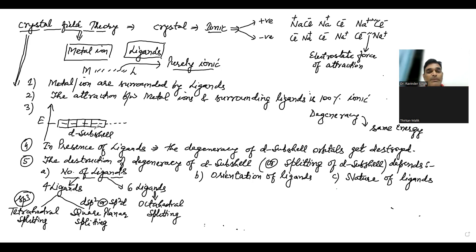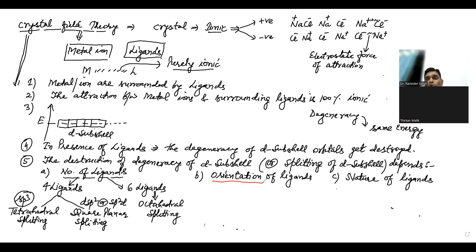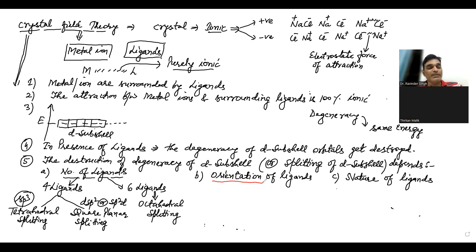The orientation of the ligands also matters — whether the ligand is directly facing the orbital (along the axis), causing more repulsion, or approaching from the side (between the axes), causing less repulsion. Regarding the nature of the ligand: a strong ligand causes more splitting of the D sub-shell orbitals, while a weak ligand causes less splitting. Now let us explain the number of ligands factor, starting with octahedral splitting.